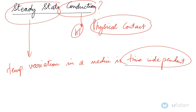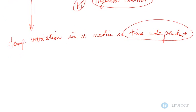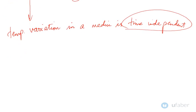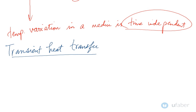Now moving ahead, on the other hand we also have a term which we call transient heat transfer. So in steady state the temperature variation was time independent, whereas in transient heat transfer the conditions change with respect to time.